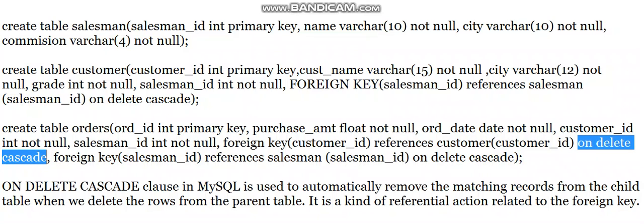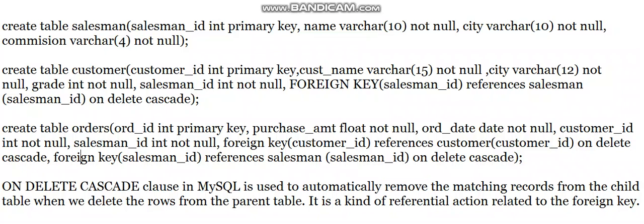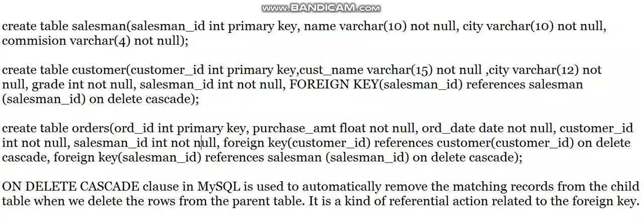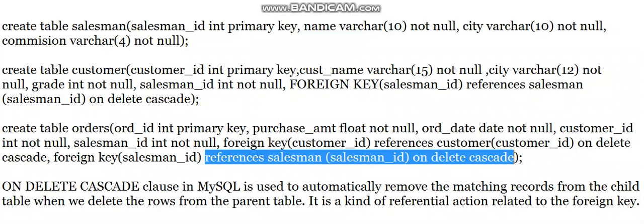ON DELETE and ON UPDATE are the two available clauses — I am using ON DELETE CASCADE here. Similarly, FOREIGN KEY (salesman_ID) REFERENCES salesman(salesman_ID) ON DELETE CASCADE. So when a customer or salesman is deleted, the corresponding rows in the orders table are also deleted automatically.